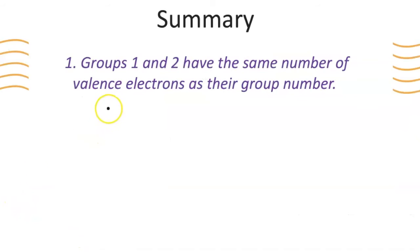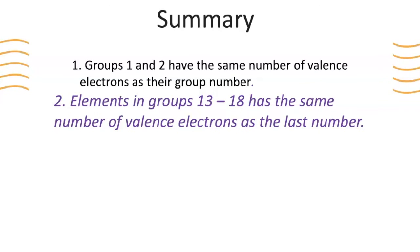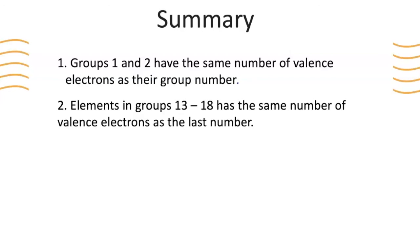In summary, groups one and two have the same number of valence electrons as their group number. And elements in groups 13 through 18 have the same number of valence electrons as the last number in the group number. So elements in group 17 will have seven valence electrons, and elements in group 13 will have three valence electrons. We skip groups 3 through 12 because they follow different rules. I hope this helped in understanding valence electrons and how to use a periodic table to determine them.